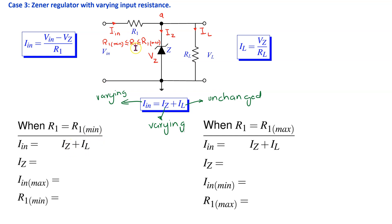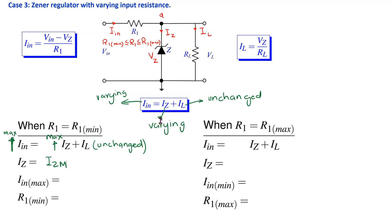To find R1_minimum: when R1 is at its minimum, IIN is at its maximum (since IIN is inversely proportional to R1). Since IL is unchanged, IZ is forced to its maximum value IZM. Thus IIN_max = IZM + IL, and R1_min = (VIN − VZ) / IIN_max.